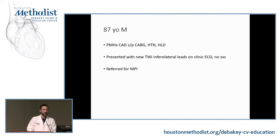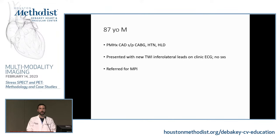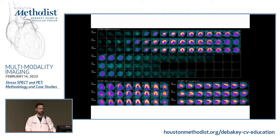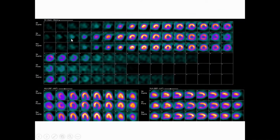The first case is an 87-year-old male with history of CAD post-CABG, hypertension, and hyperlipidemia. His main presenting issue was new T-wave inversions in the inferolateral leads on clinic EKGs; he was asymptomatic at the time. The referring physician ordered an MPI — a SPECT study. Here are the perfusion images: stress supine on top, stress prone, and rest supine, so we compare rest to stress. These are the short axis images, horizontal long axis, and vertical long axis, so we can comment on different walls and perfusion abnormality location.